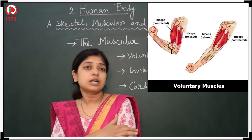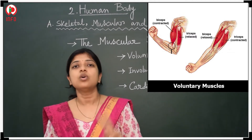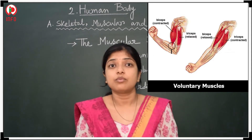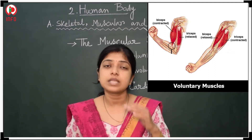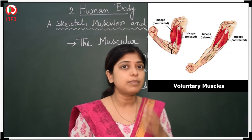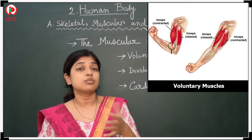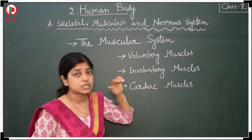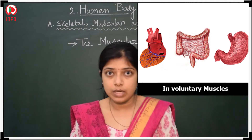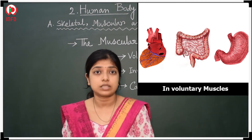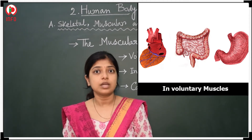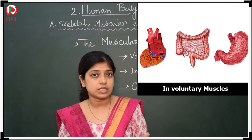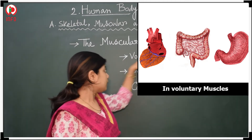Examples of voluntary muscles are the triceps and biceps, located in our arm. When we are willing to move these muscles, it is possible by us. But there are some other muscles whose movement is not possible by our intention — these are the involuntary muscles. Involuntary muscles are not controlled by ourselves, such as the heart muscles and digestive system muscles.